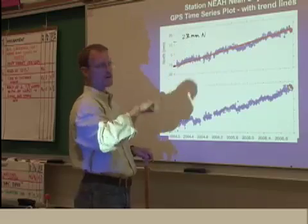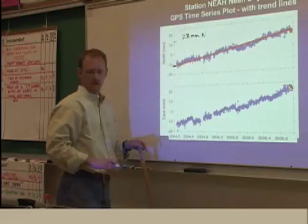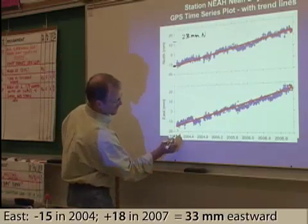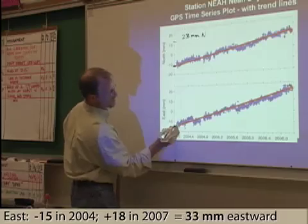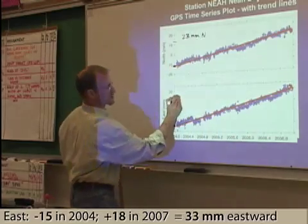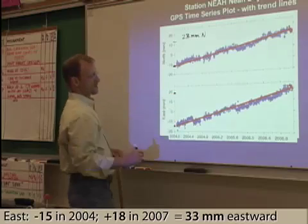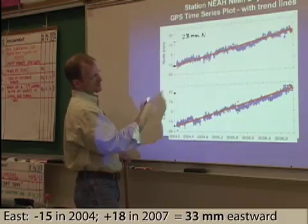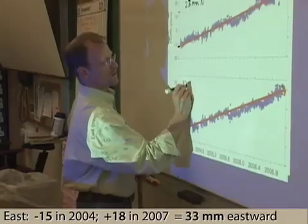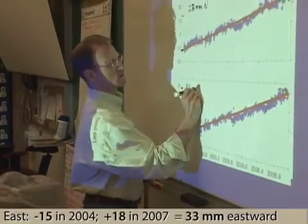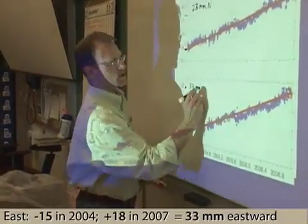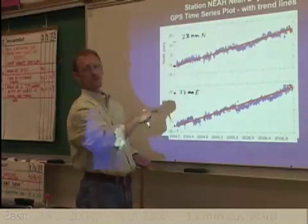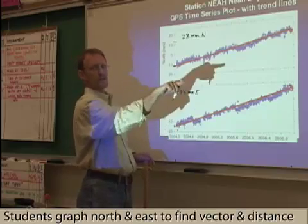That's only the north and south component. Do the same thing on the east and west component. What you figure out is it started at 2004 right about there, and came across to about here. So it went east from about negative 15 to 18 — that's about 33 millimeters. In this case it's low going up, so that would be east. So we have 23 millimeters north and 33 millimeters east.